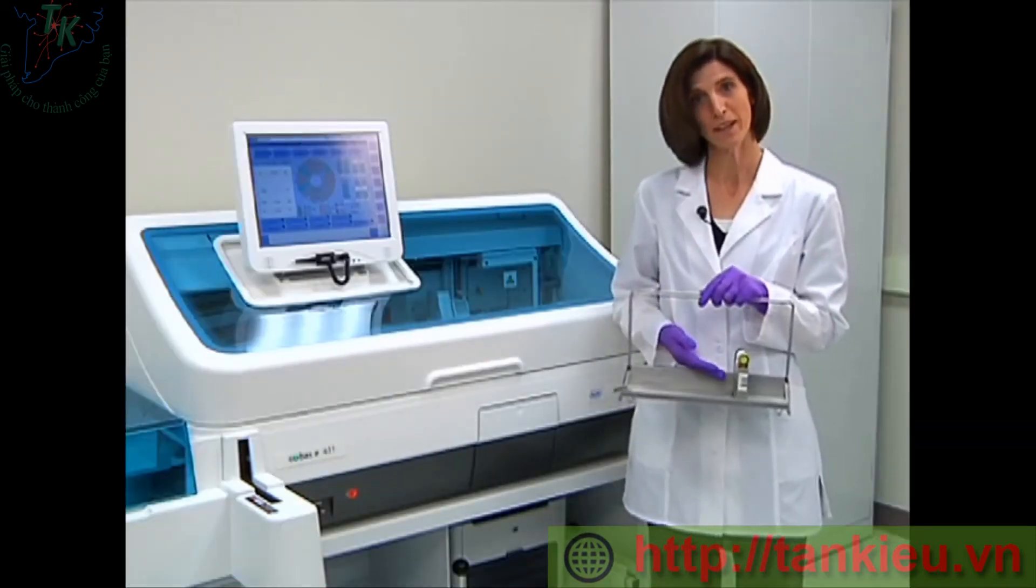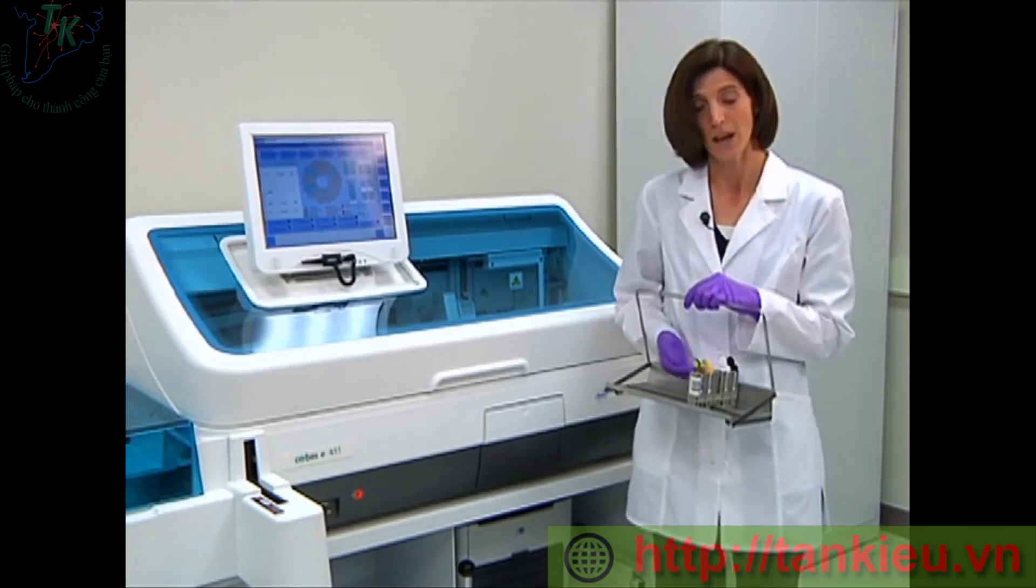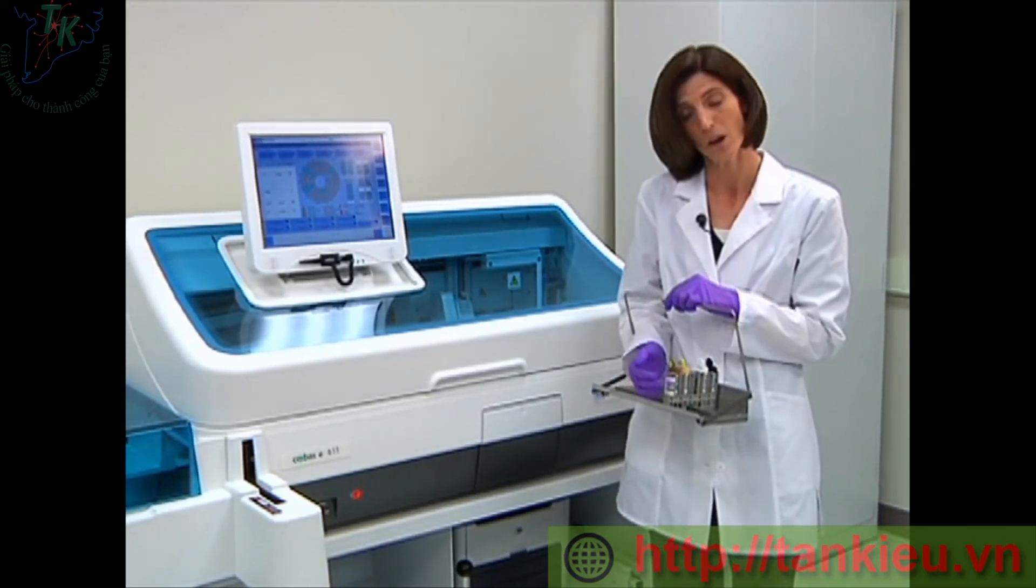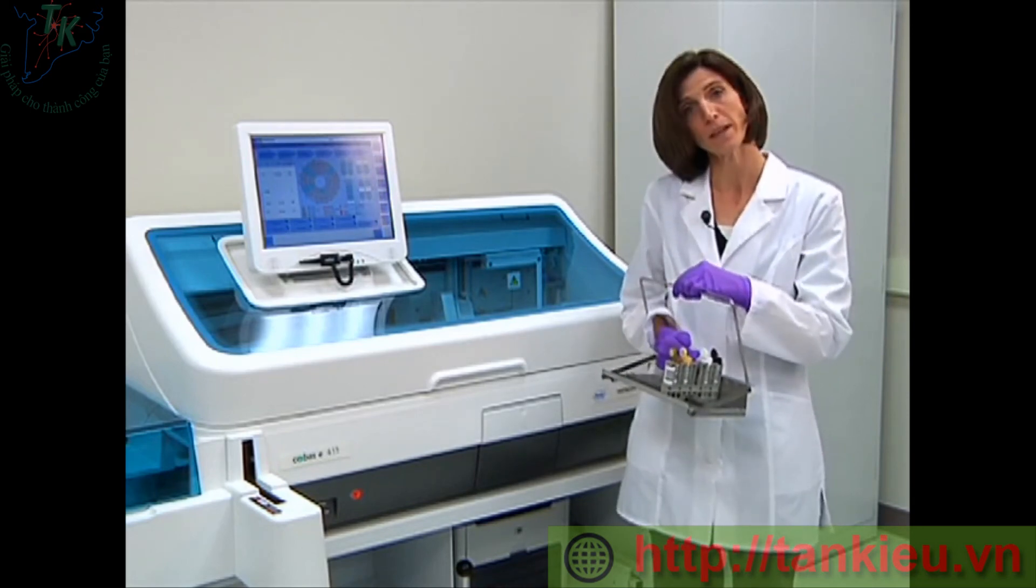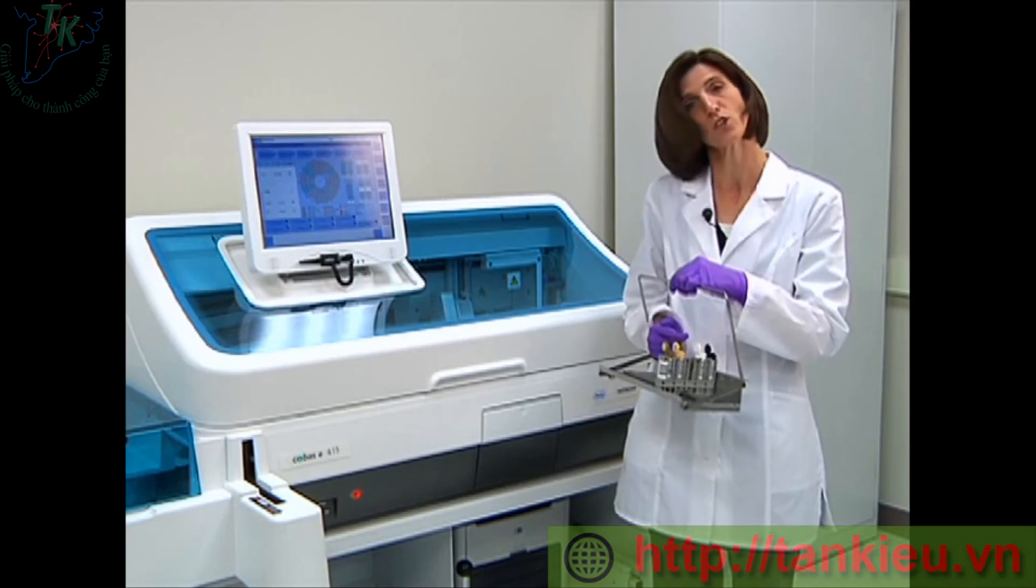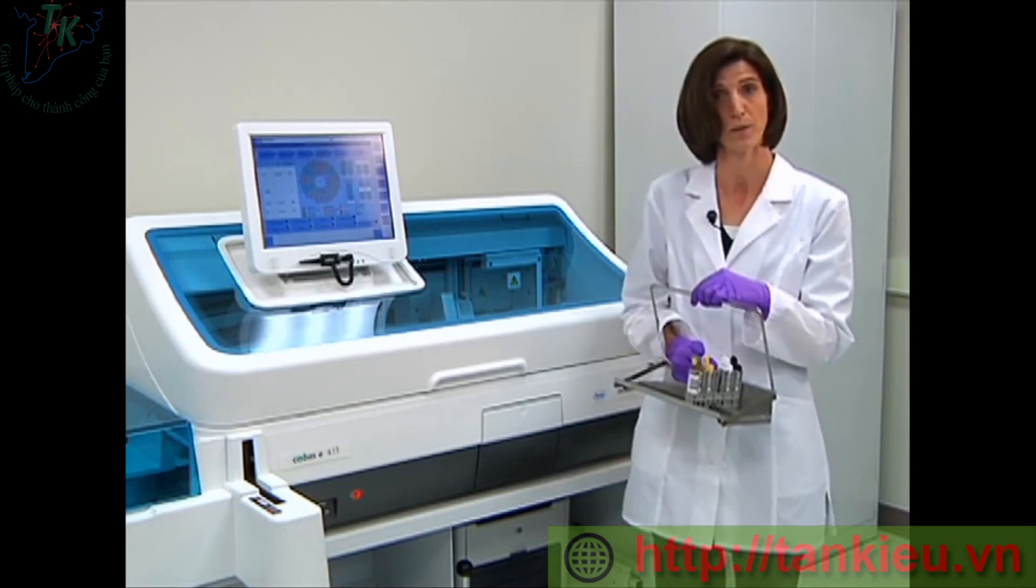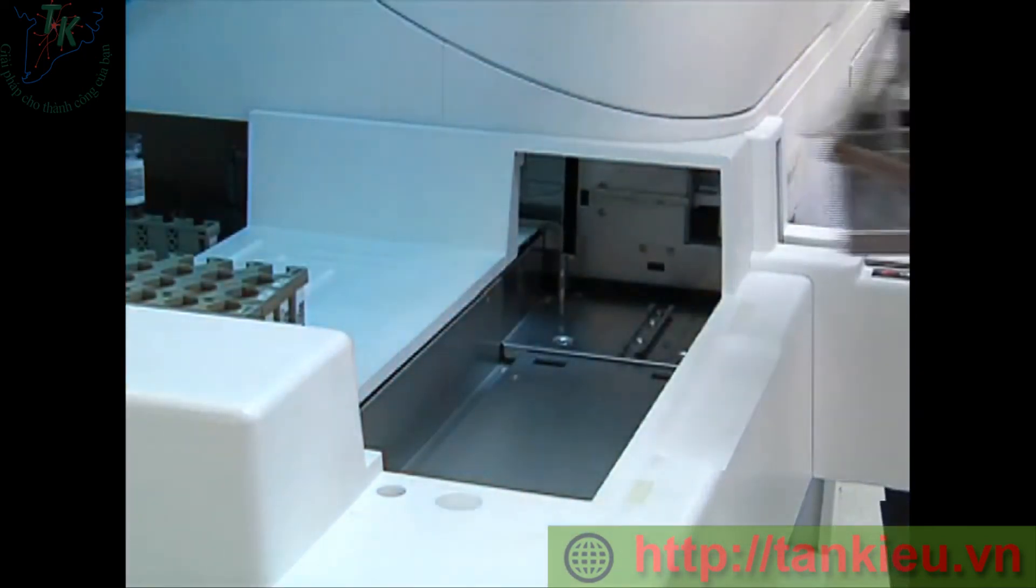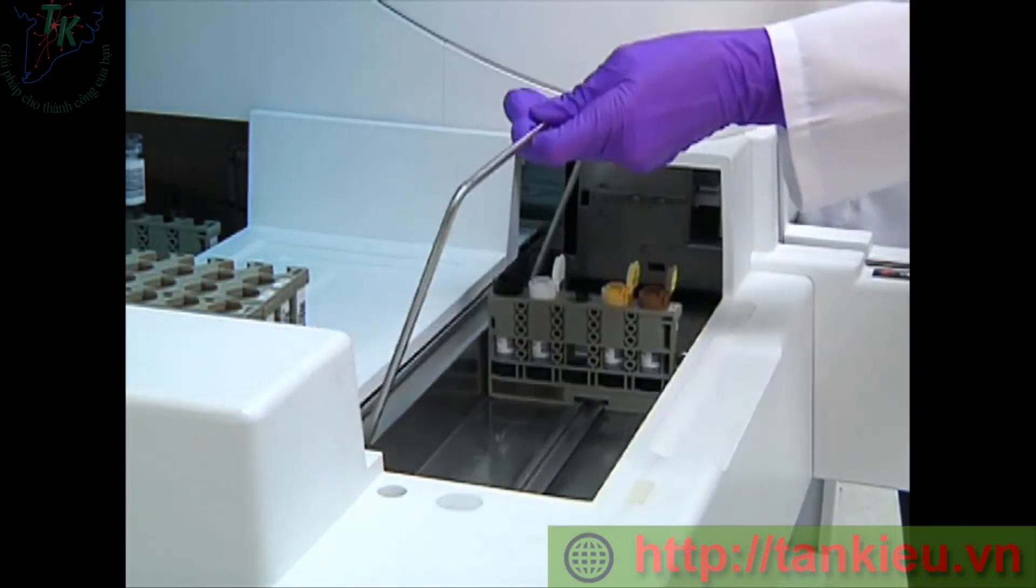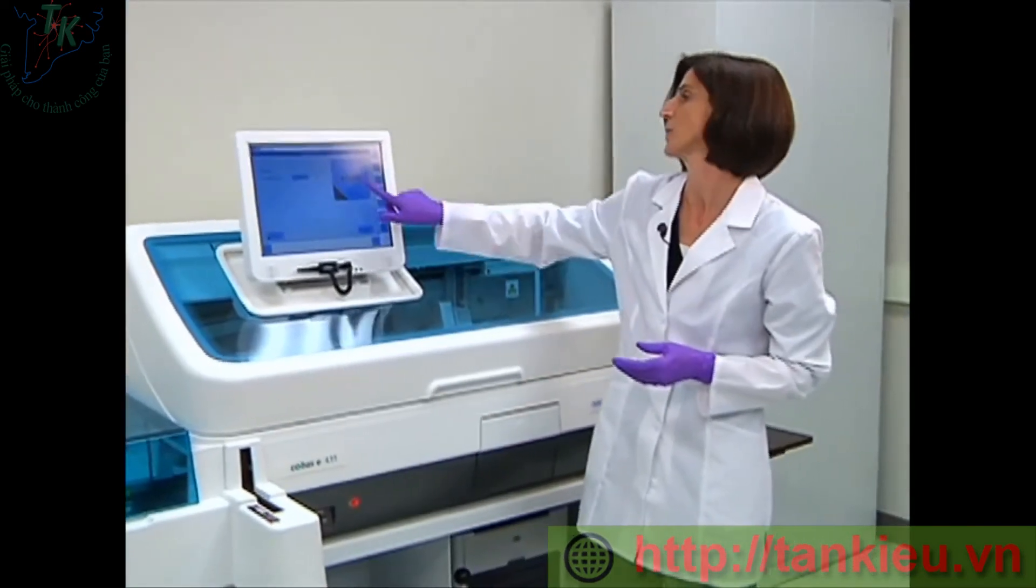Now I have prepared my calibrators and controls, and I have loaded them on a five-position rack. I need to make sure that the barcode is facing out and all my caps are open. Also, I'm going to leave a space in between my calibrators and my controls to make sure that I get QC run on all tests that are loaded. Now I'm going to load my tray. So I simply load the tray, close the cover, and start the instrument.